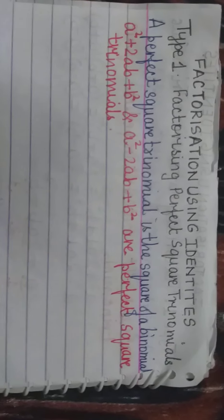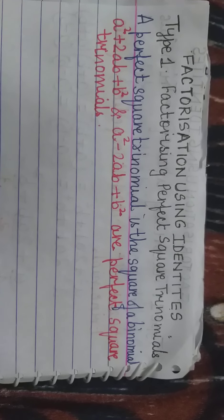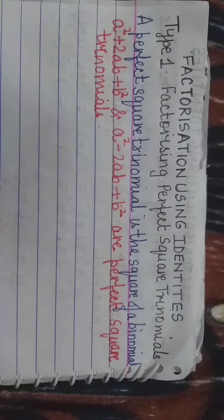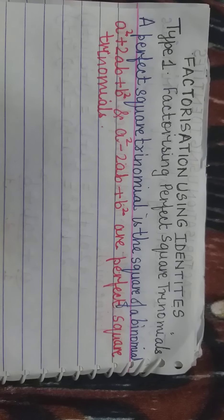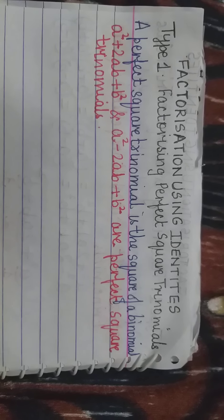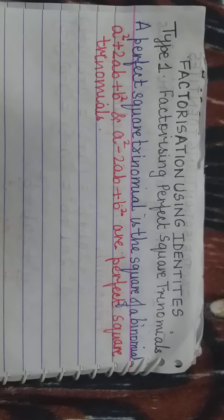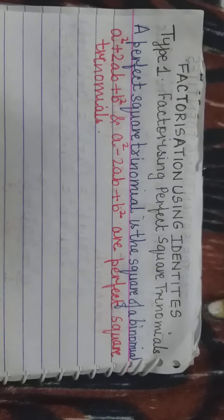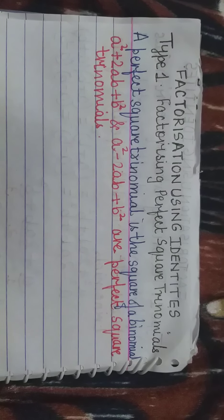Om Shanti children. Today we are going to do factorization using identities. First, Type 1: factorizing perfect square trinomials.